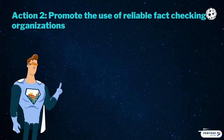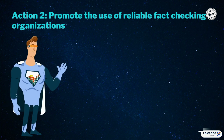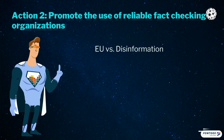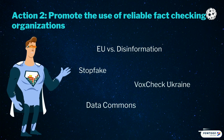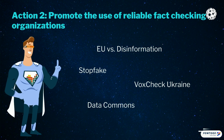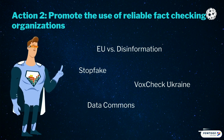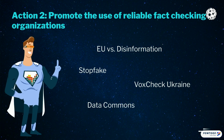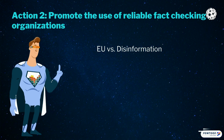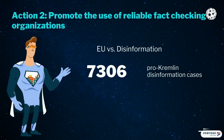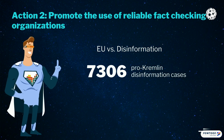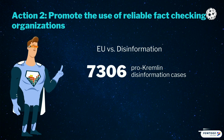Action 2: Promote the use of reliable fact-checking organizations. EU vs. Disinformation, Stop Fake, Vox Check Ukraine, and Data Commons are examples of fact-checking initiatives that provide accurate information about how a story was falsified and what is the source of propaganda and disinformation. EU vs. Disinfo, for instance, has a record of 7,306 pro-Kremlin disinformation cases collected and debunked that can easily be accessed in its database. You can check the references below the video.